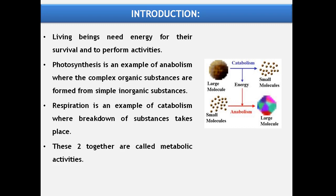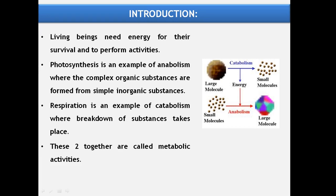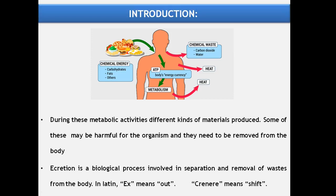Anabolism means where complex organic substances are formed from simple inorganic substances - that is, building up body material. Making the complex from the simple is called anabolism, and photosynthesis is the best example. Respiration is an example of catabolism, where breakdown of substances takes place - complex materials are broken down into simple materials. Anabolic and catabolic activities together are called metabolic activities. During these metabolic activities, different kinds of materials are produced, some of which may be harmful to the organism and need to be removed.